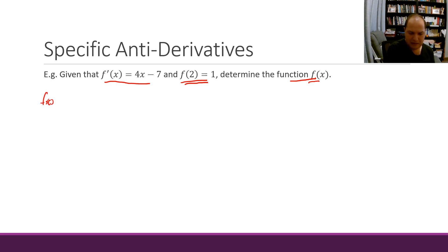So F dash x is 4x minus 7, so F of x is going to be the integral of 4x minus 7 dx. Integrating that becomes 4x squared over 2 minus 7x plus c, which simplifies to 2x squared minus 7x plus c.